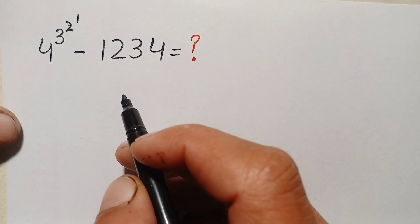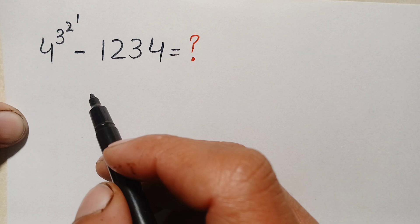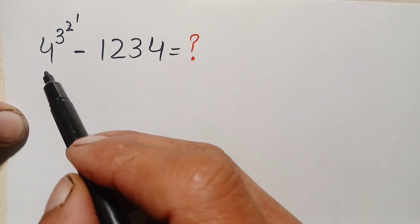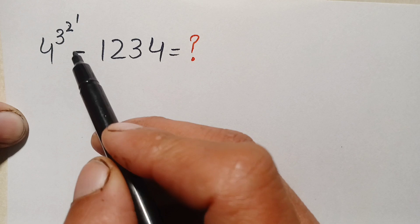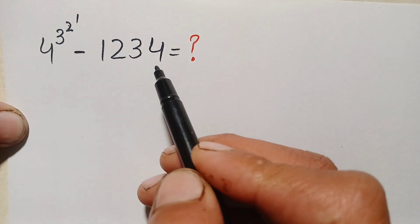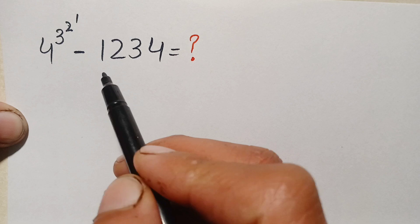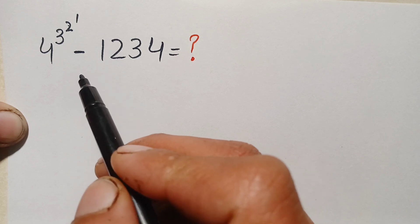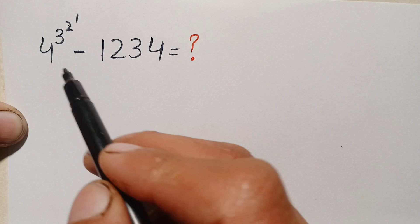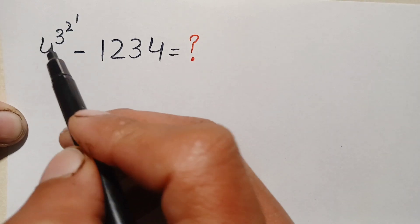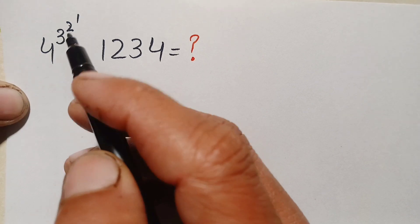Hello everyone, you are welcome to Math Explorer. Today we will solve this interesting exponential math problem: 4 raised to power 3 raised to power 2 raised to power 1, minus 1234. You will never see such a beautiful math problem having one number in exponential form and one number having the same digits.